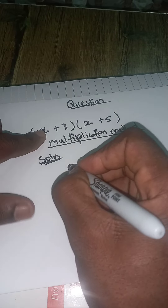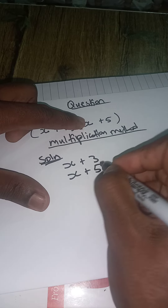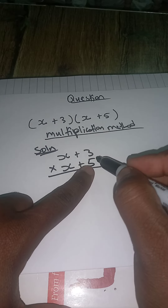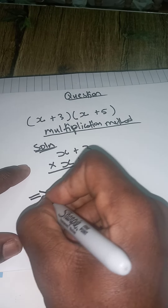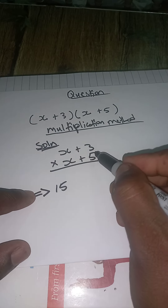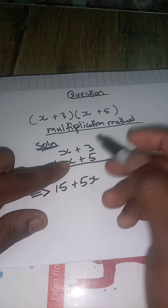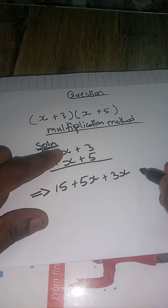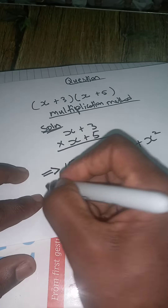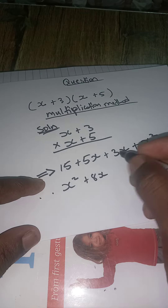Alright, solution. We write what is in the first bracket — x plus 3 — and what is in the second bracket — x plus 5 — and multiply like this. Five times 3 is 15, and 5 times x is 5x. Then x times 3 is 3x, and x times x is x squared. Tidy up: x squared, and 5x plus 3x is 8x, plus 15.